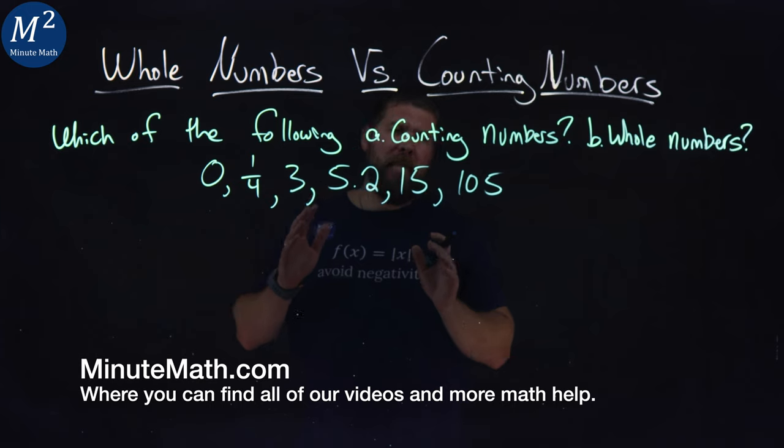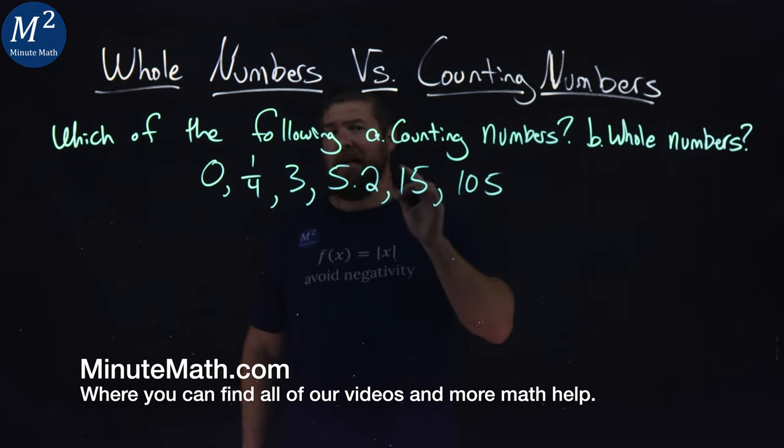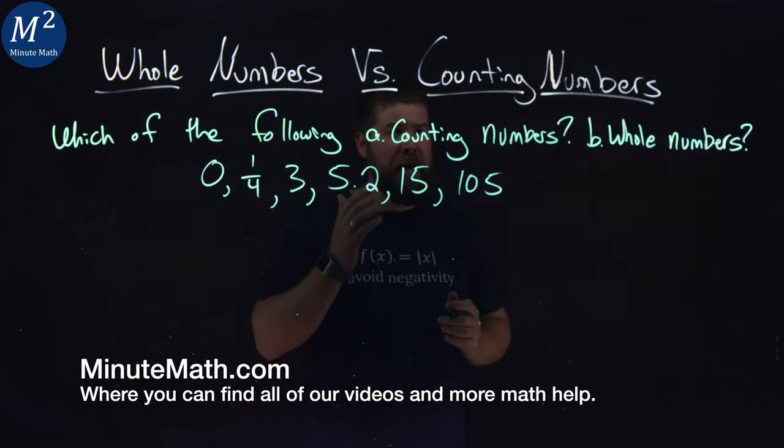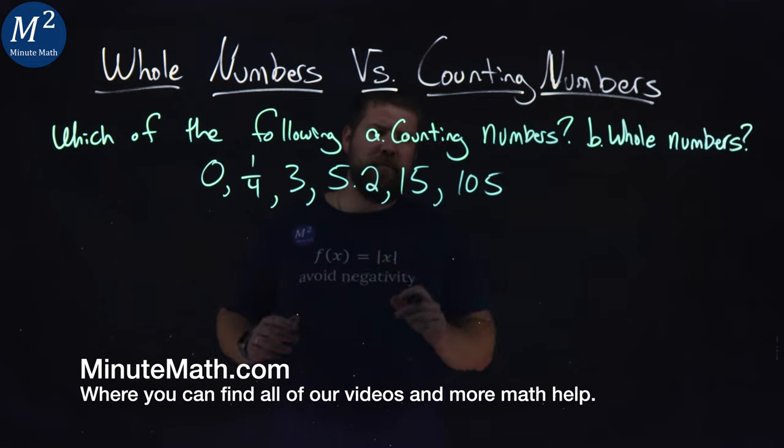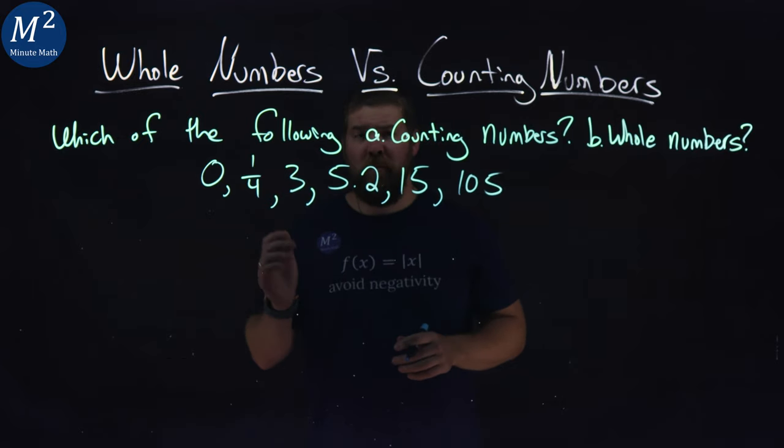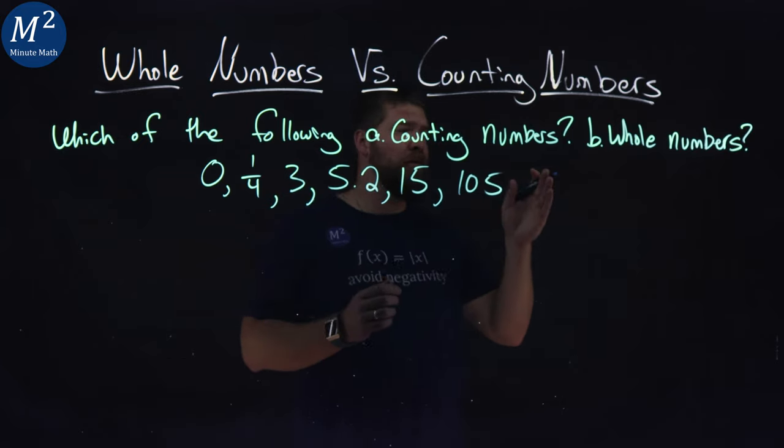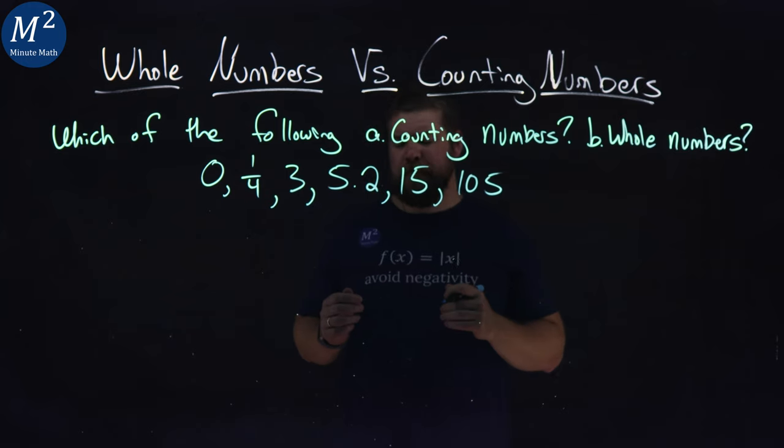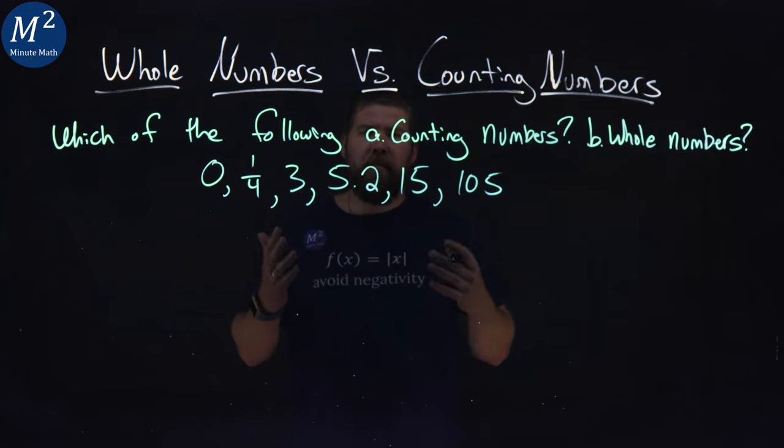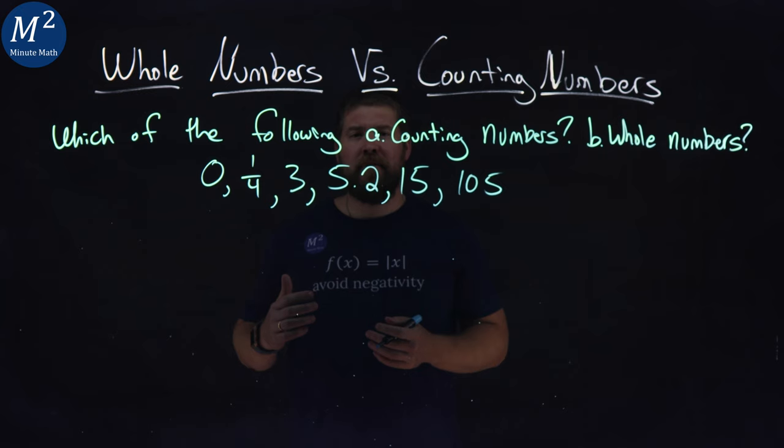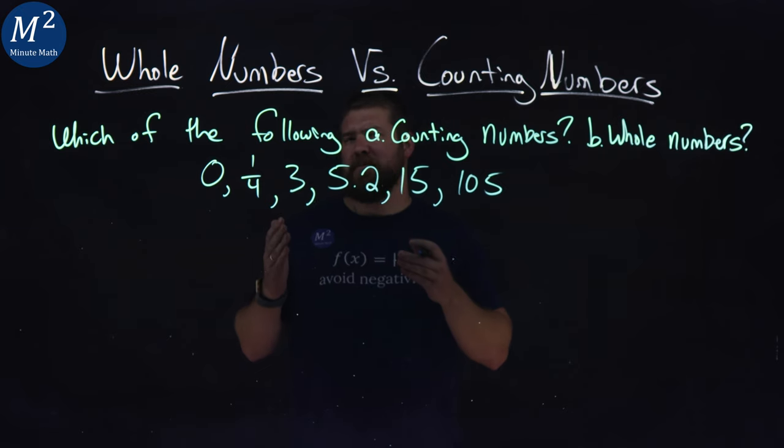Now there's not much of a difference here between a whole number and a counting number. And we're going to go through all these numbers here and determine which ones are counting numbers and which ones are whole numbers. Now, counting numbers, as you can guess, really start at 1.